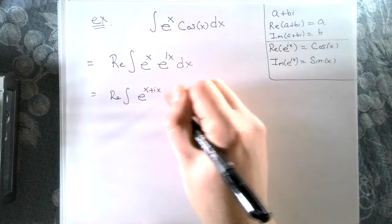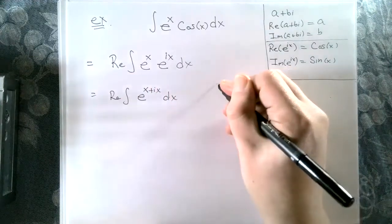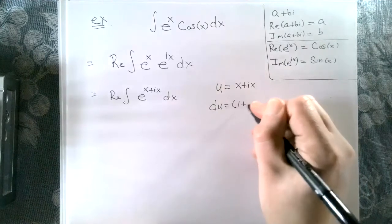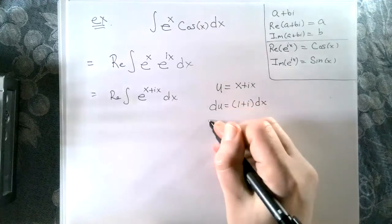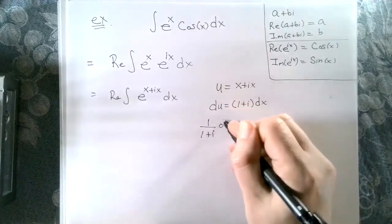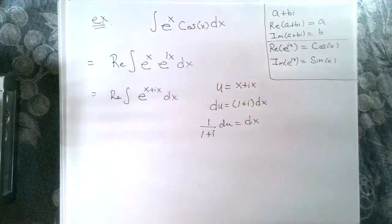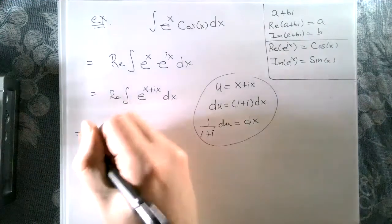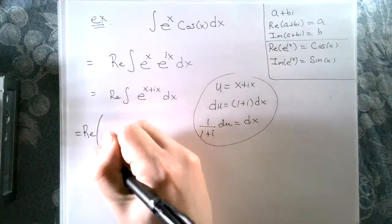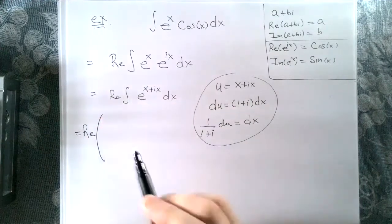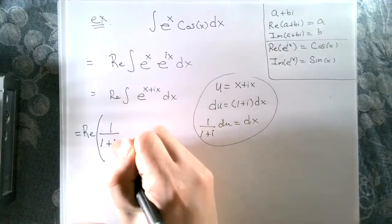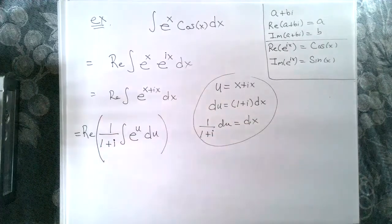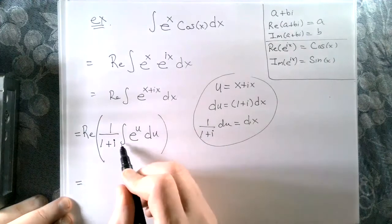That reminds us of a substitution. Let u equal x plus ix. The derivative is one plus i dx, so dx equals one over one plus i du. We want to be careful to apply the real part operator at the very end, so we get one over one plus i times the integral of e to the u du. The anti-derivative of e to the u is itself.